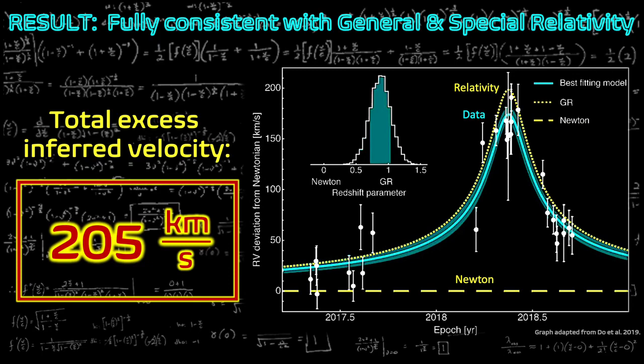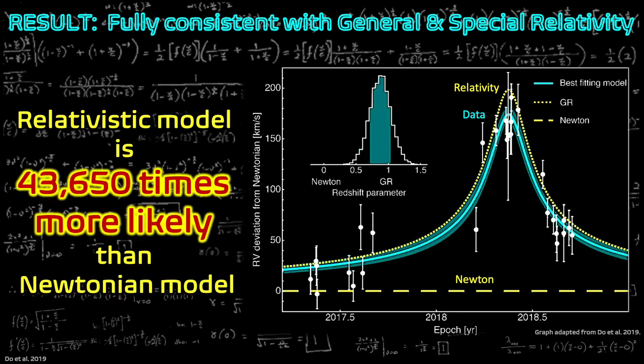Instead, we find redshift equal to what special and general relativity predict. These calculations are consistent with the conclusions of the Ghez research team, who found the relativistic model to be 43,650 times more likely.